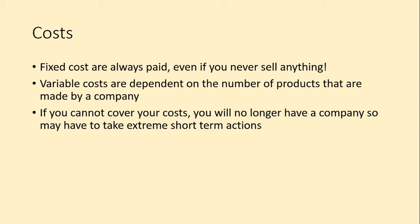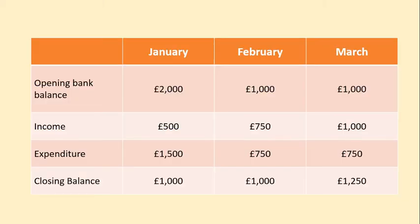Variable costs are dependent on the amount of things you produce. For example, raw materials: if you're not making a pair of shorts, you don't have to pay for the materials to make them — those are variable costs. You need to make sure you're covering all these costs, because if not, you don't have money in the bank to cover your bills. We've talked about extreme short-term actions such as destocking.